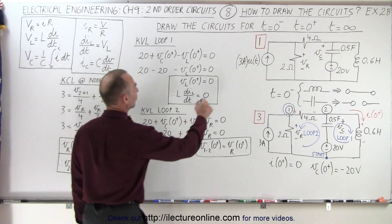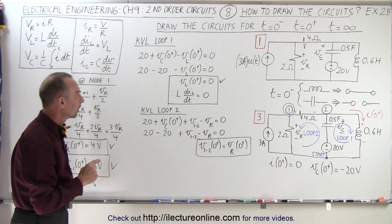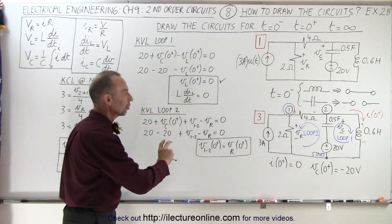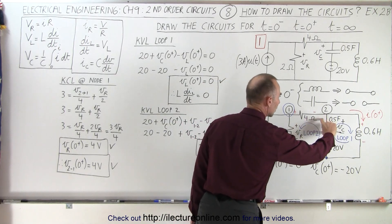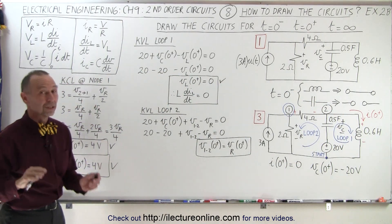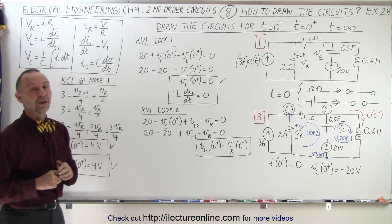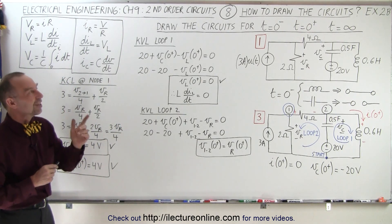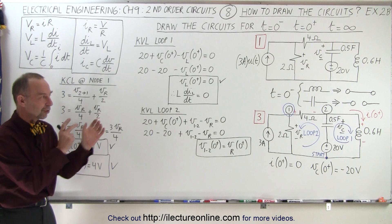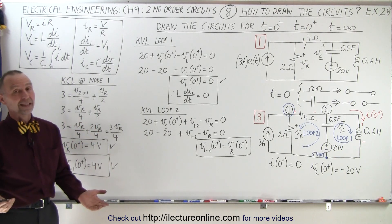So I found the voltage across the resistor, the voltage between the two nodes, and the voltage across the inductor right after time equals zero. And of course I already knew the voltage across the capacitor at time equals zero. So I've determined the voltage across all components right after time equals zero. We're not done yet — we still have additional things to calculate, so we'll continue in video 2C. But so far we know the voltages across all components right after the current begins to flow through the current source, and that is how it's done.